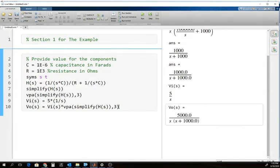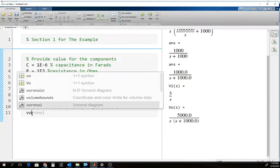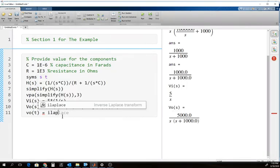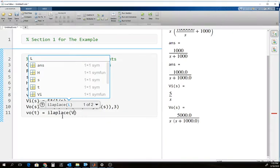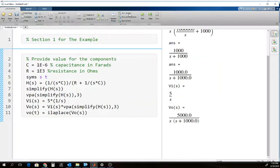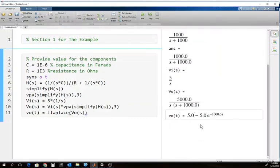If we wanted to see what our output would be in the time domain, I'm going to use lowercase v. Keep in mind, MATLAB is case-sensitive. It's going to be a function of t. The function call is ilaplace, inverse Laplace, capital V_o(s). I'm going to run that section. There is our output. Our output as a function of t is 5 minus 5 times e to the minus 1,000t.